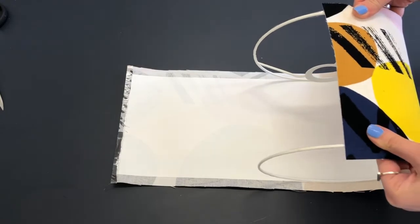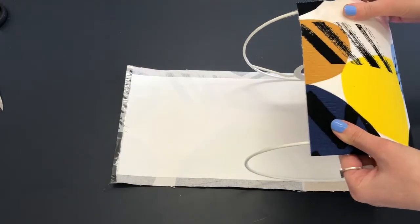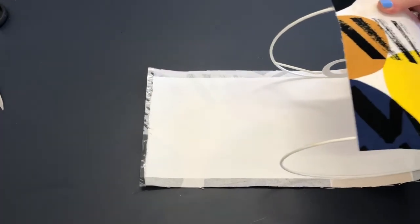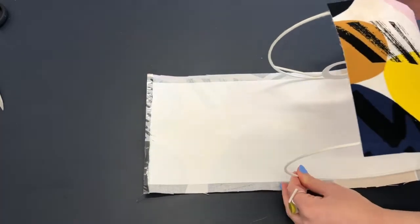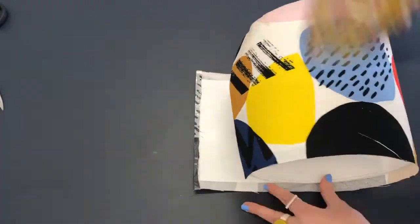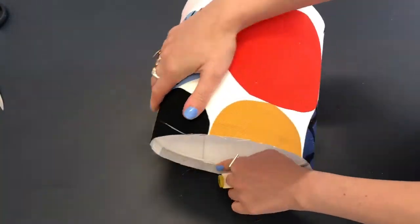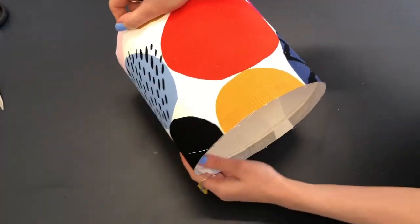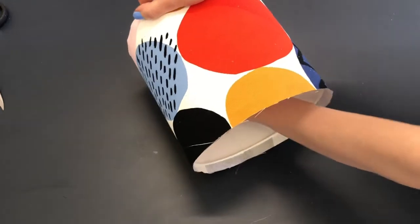Now it gets kind of tricky when you get to this stage because you can't really see anymore so you just have to kind of keep looking side to side making sure that you are staying in line and then you can just push from the inside